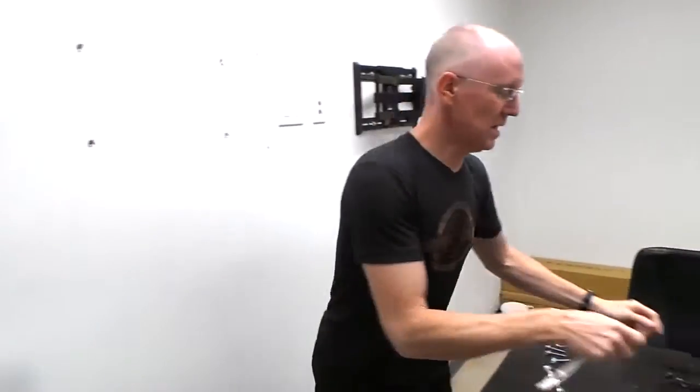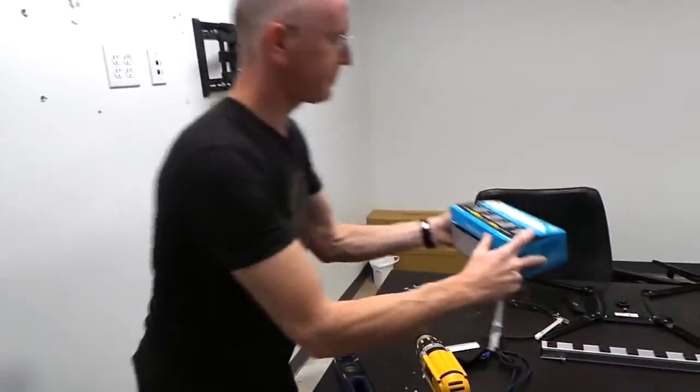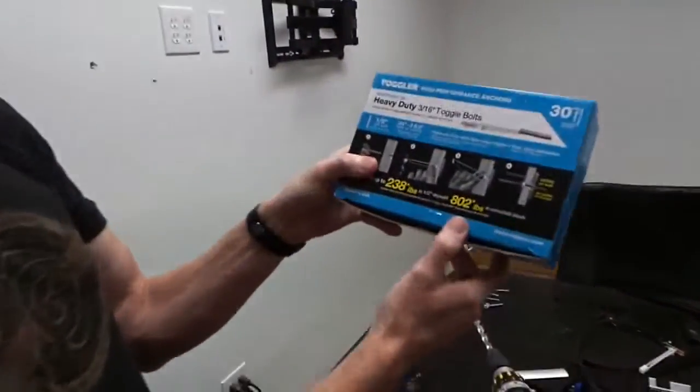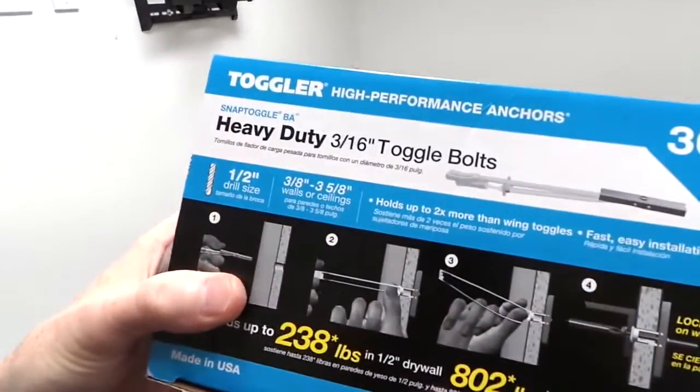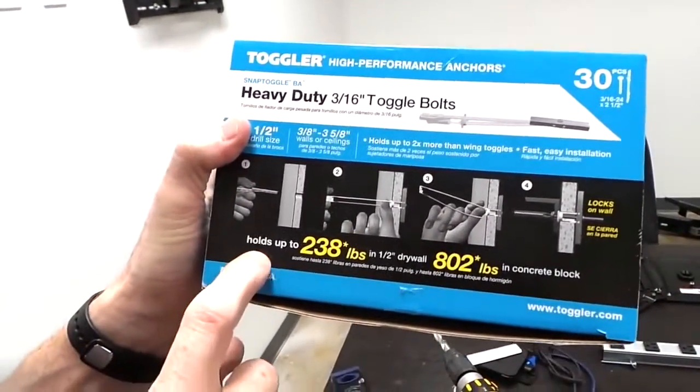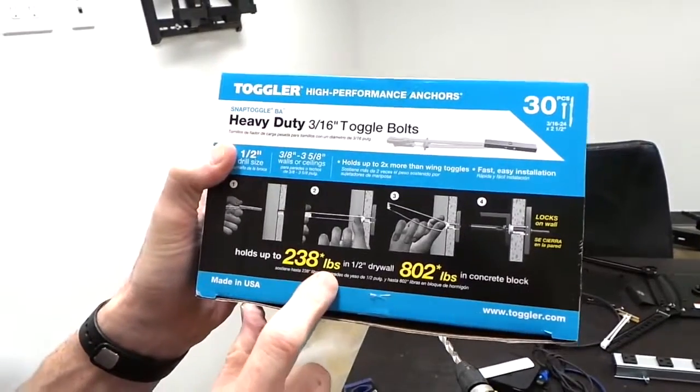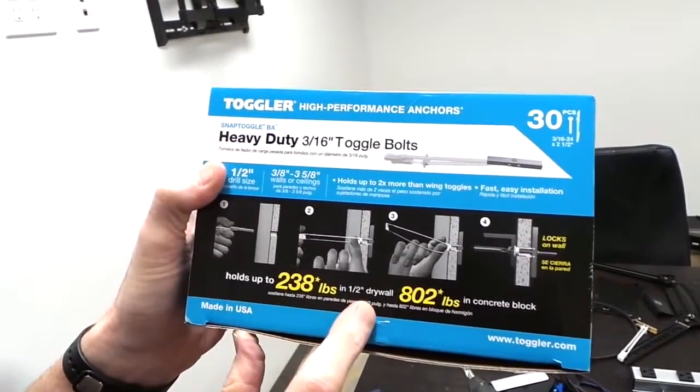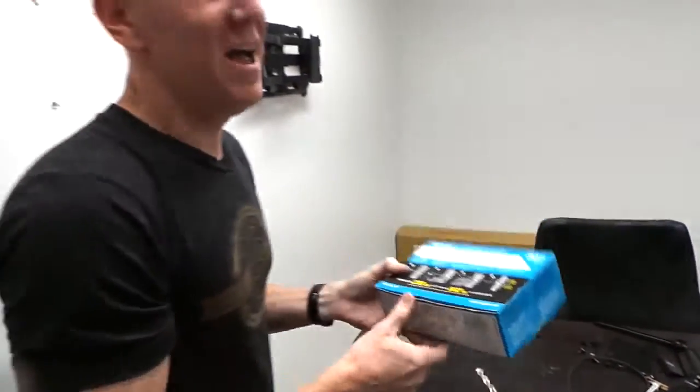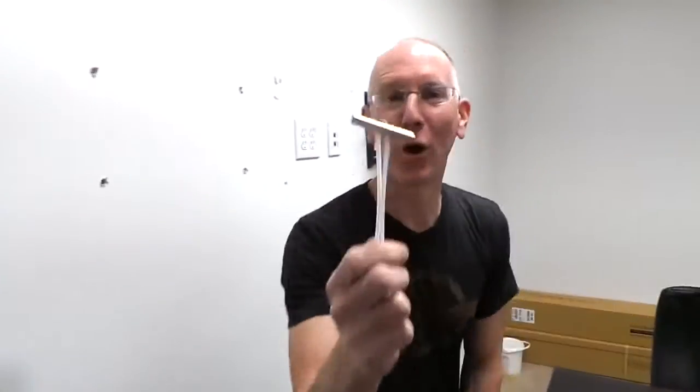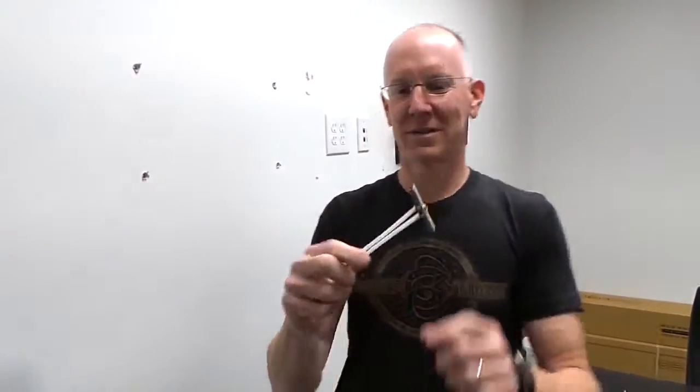I want to show you guys how these things hook up because it's really cool. We are going to be using these toggler high performance anchors and you can see that they hold up to 238 pounds in half inch drywall, which is what we've got here. That's 238 pounds per toggle.